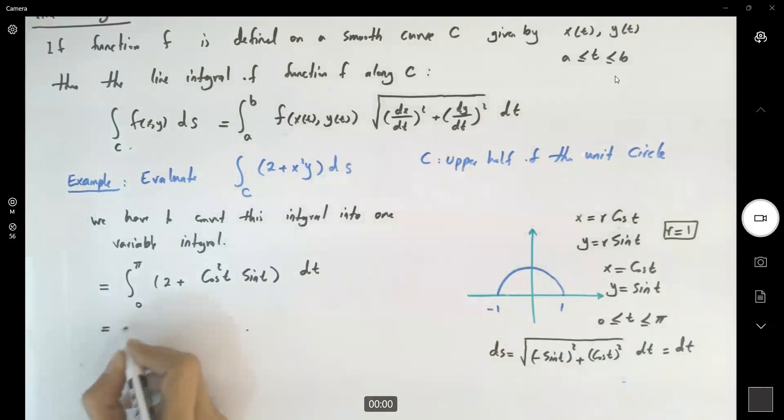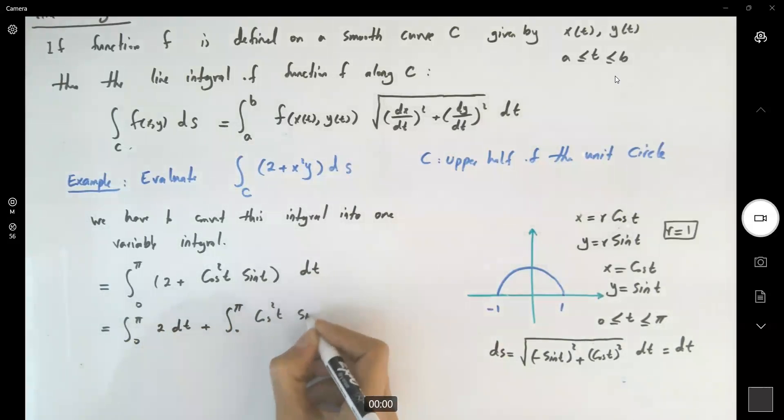Very good. This guy becomes the integral 0 to pi 2 dt plus integral 0 to pi. Here you can use u sub cosine squared t sine t dt.